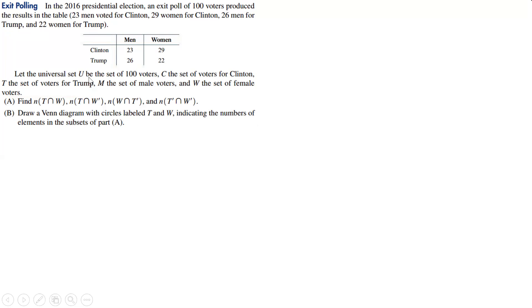We're letting U be the universal set of 100 voters. C is the set of voters for Clinton, T is the set of voters for Trump, M is the set of males, and W is the set of females. We're supposed to find the following. Let's start by drawing a Venn diagram. Let's make it big enough so we can read it. Here we have our universal set, and it looks like we want T and W because those are the key pieces they're asking for.